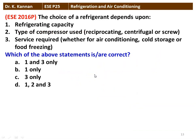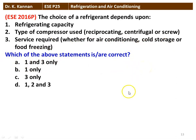The next question from the 2016 question paper: the choice of refrigerant depends on refrigeration capacity, type of compressor used, and whether the application is air conditioning, cold storage, or food freezing. The correct answer is 1 and 3 — refrigeration capacity and the type of service (air conditioning, cold storage, or food freezing) are the two parameters used in selecting the refrigerant.